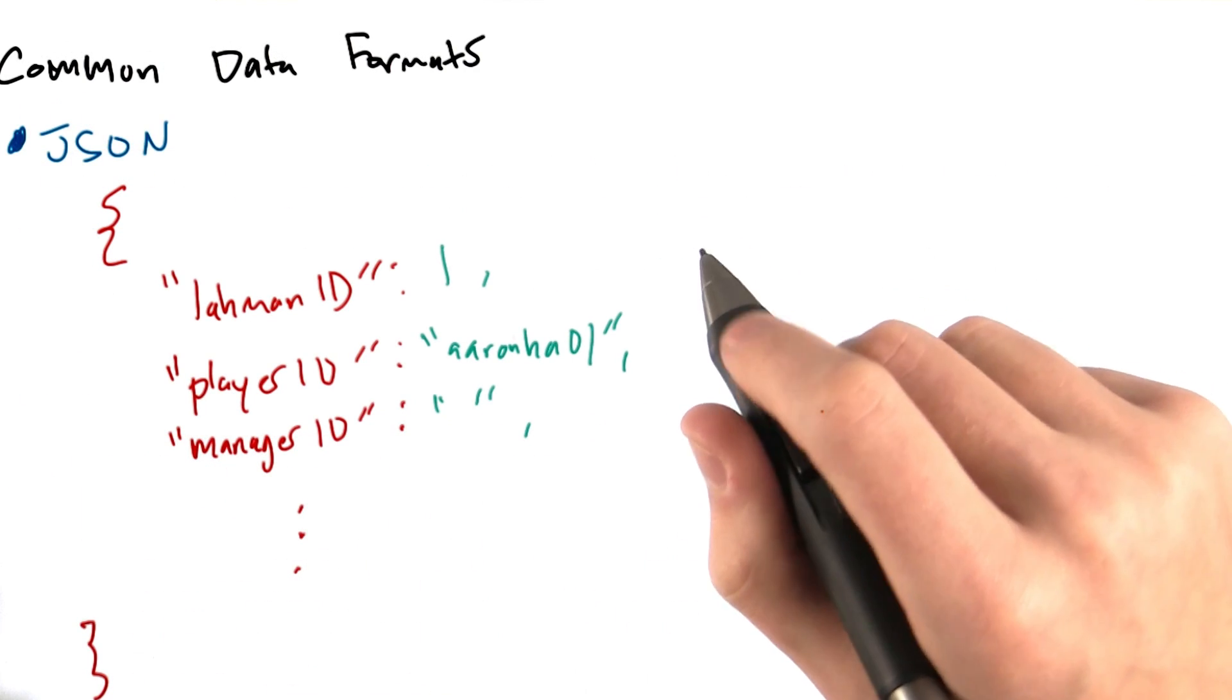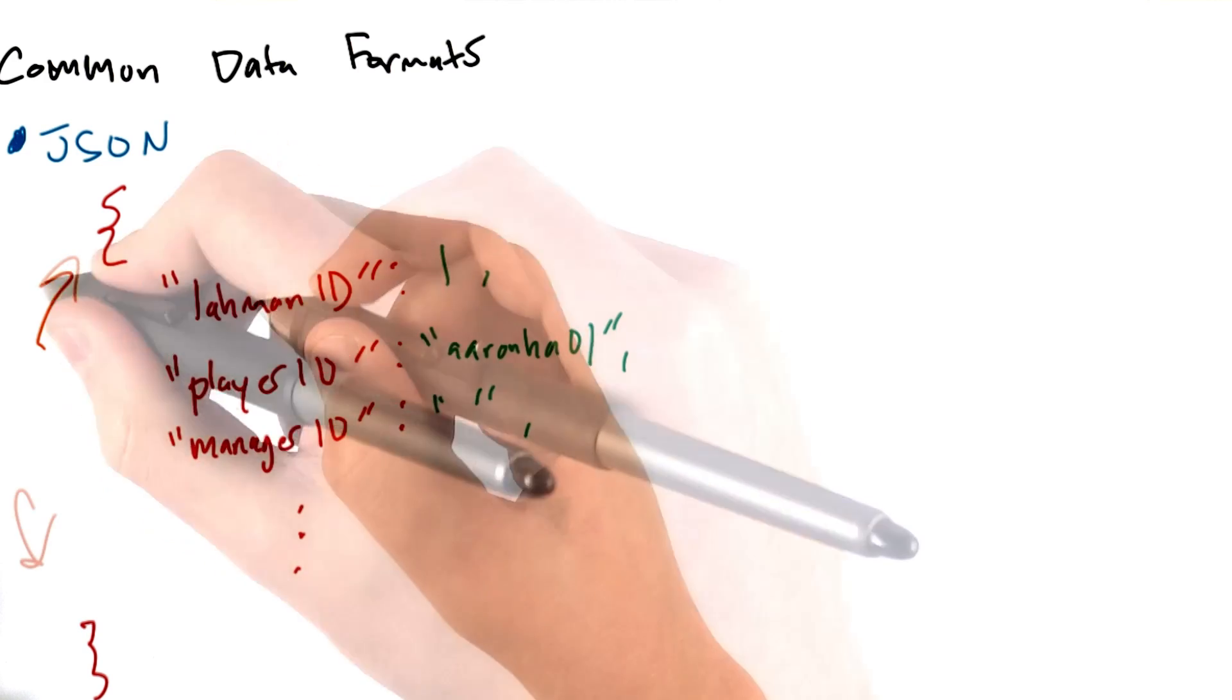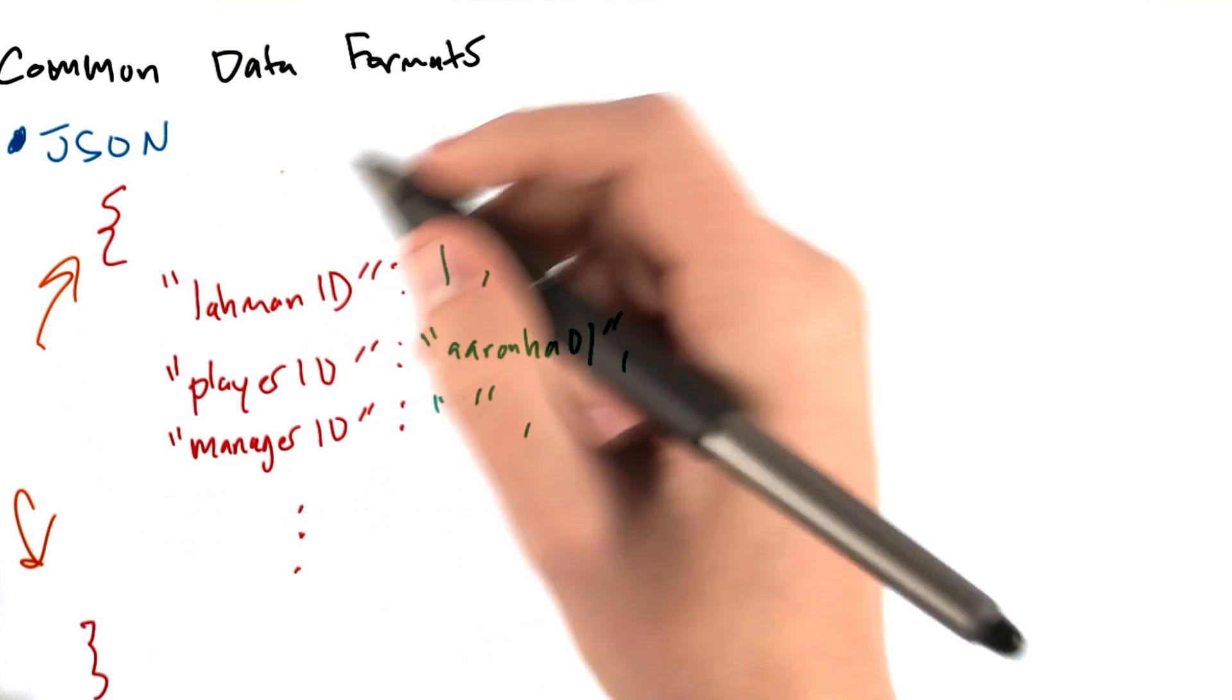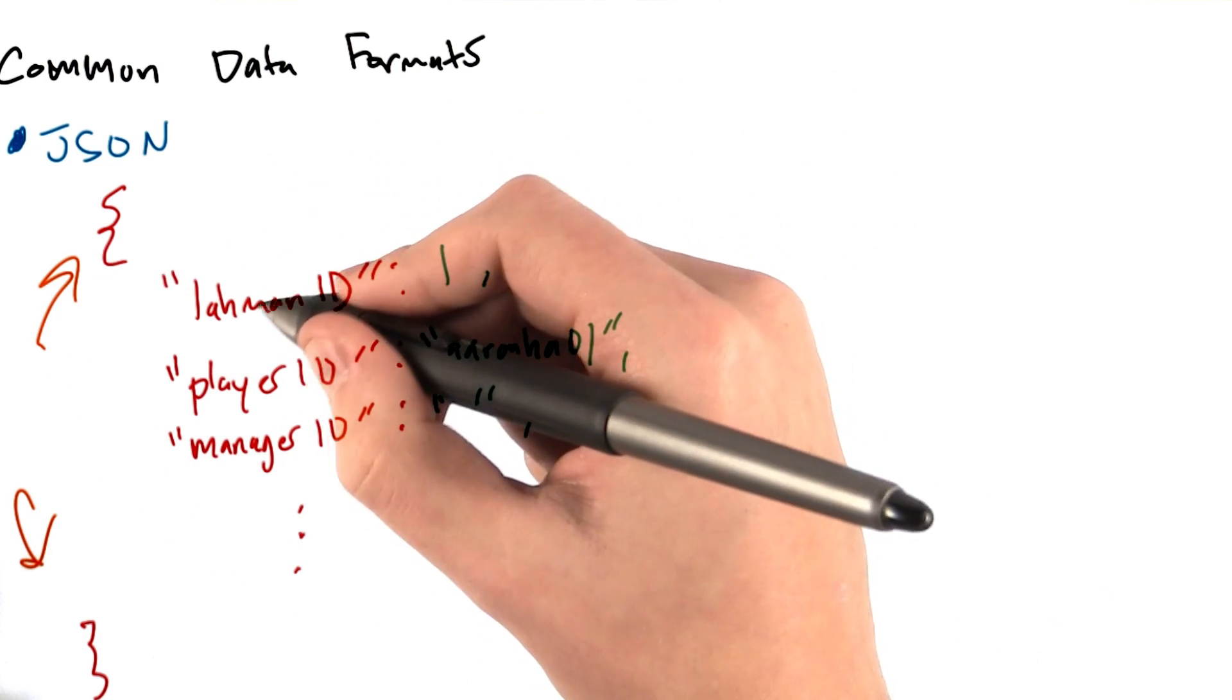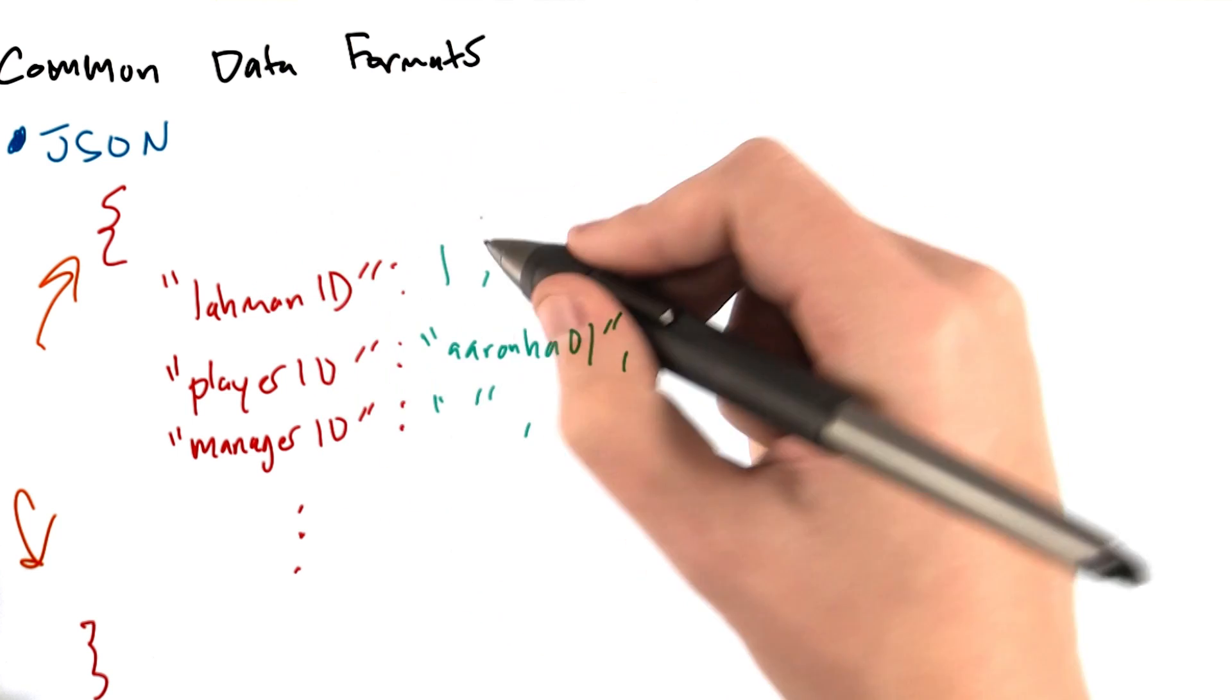Finally, for a JSON document, we have a number of JSON objects, indicated by these curly braces. A JSON object looks a lot like a Python dictionary. We have keys, which correspond to what we would see in the header row in a CSV file, followed by values.